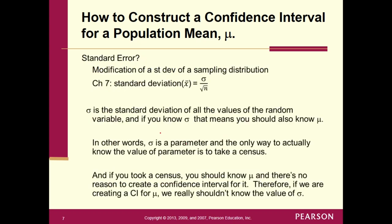What about the standard error? The standard error is a modification of the standard deviation of the sampling distribution. From Chapter 7, the standard deviation of the sampling distribution of x-bar was sigma divided by the square root of n. Sigma is the standard deviation of all values of the random variable. If you know sigma, you should also know mu — because sigma is a parameter, and the only way to know a parameter's value is to take a census. If you took a census, you should know any other parameter, such as mu.